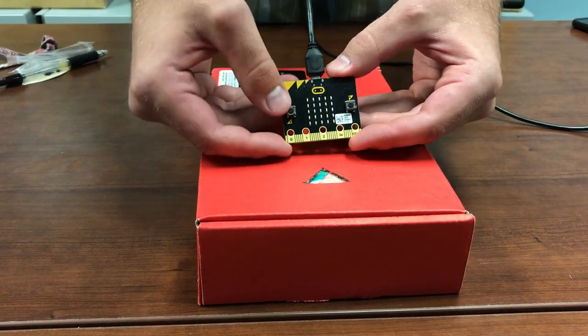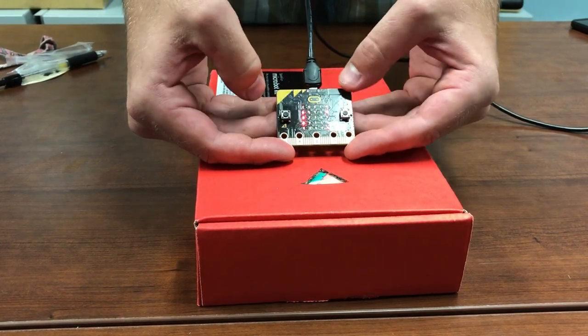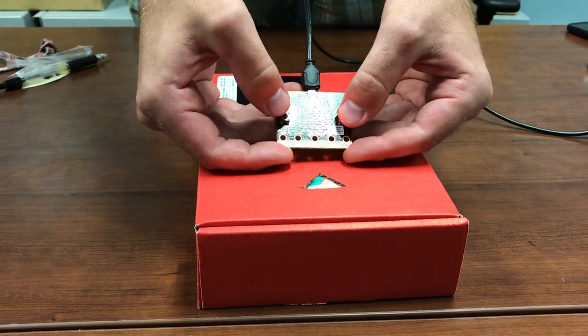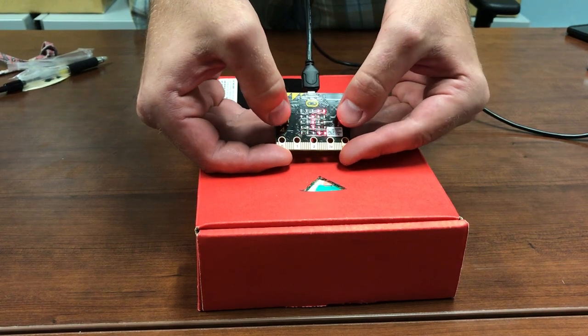For this particular safe we must send the string zero one zero one, which is the binary representation for the number five. As you press the A and B buttons, you will see the safe unlock.